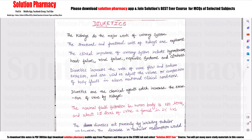First of all, we will understand what Diuretics are. Our kidney is a major organ of the urinary system, and the functional unit of the kidney is called the nephron. The urinary system is important in excretion, hypertension, heart failure, renal failure, nephrotic syndrome, and cirrhosis — in all these areas, the urinary system is important.